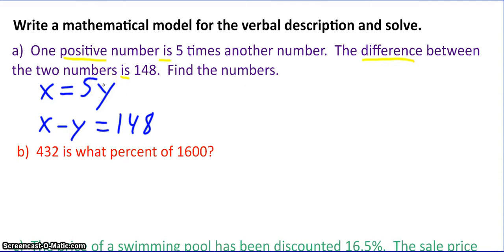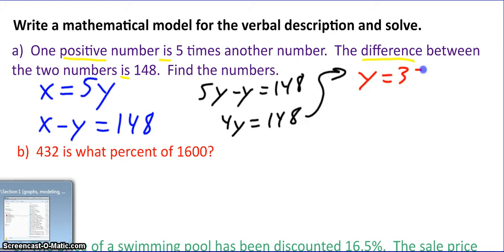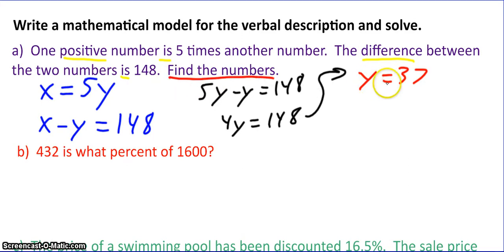So now I need to solve the system of equations. Weird, we just did that. So if I have x equals 5y, and x minus y is 148, again, I can use substitution and or elimination. Since I have x equals 5y, I'm just going to do substitution. So I'm going to say, 5y minus y equals 148. And I get y equals 37. Now remember, it said, find the numbers, not just find one of the numbers. So I also need to find x, but I know x is 5 times y, so 5 times 37 is going to be 185.